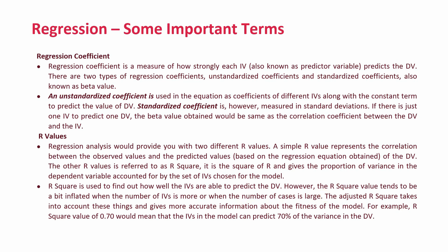You also get adjusted R-square, which takes into account these issues and gives more accurate information about the fitness of the model. R-square is expressed in decimal points, so for example an R value of 0.70 means that 70% of the change in the dependent variable is being caused by the independent variable or set of independent variables.